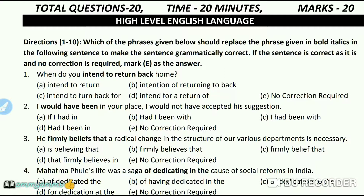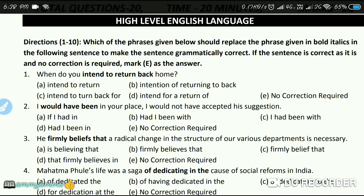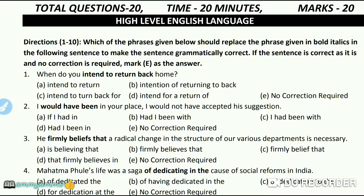This is the first question: 'intent to return back.' We have to choose the correct phase. If we have 4 options, we have to choose E — no correction required — if the sentence is already correct. Now I'm going to move ahead and check the scorecard in the last row.